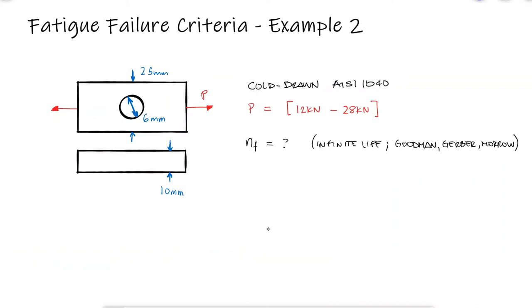We know that the factors of safety will depend on the alternating and mean stresses, the endurance strength, the ultimate strength, and in the case of the Murrow criterion, the true fracture strength.